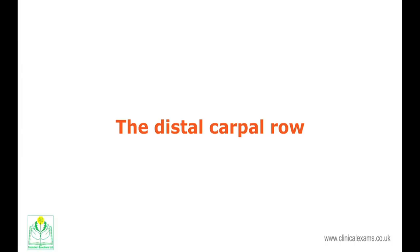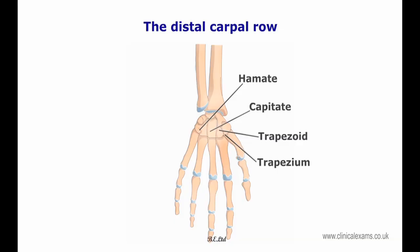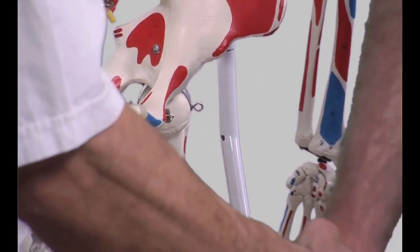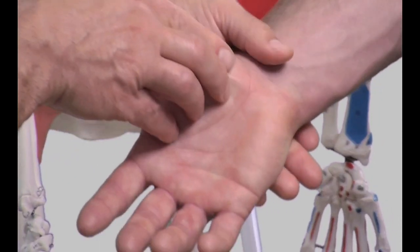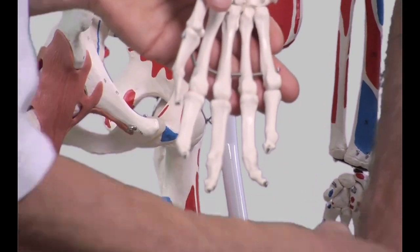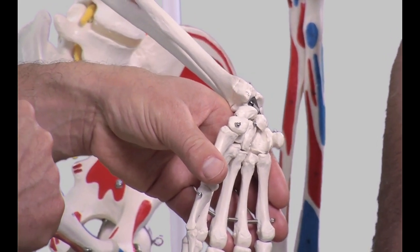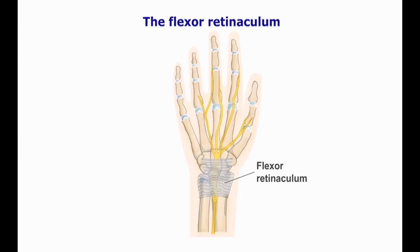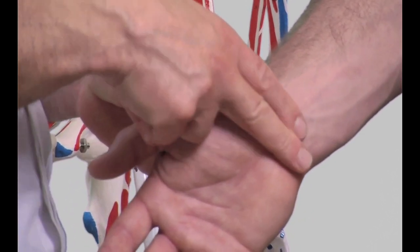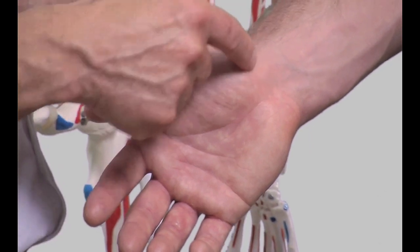The distal carpal row is made up of the trapezium, trapezoid, capitate and hamate bones. These bones are difficult to distinguish by palpation except for the hook of the hamate. The hamate is located on the medial aspect of the wrist on the distal carpal row; the hook-like process is located on the volar surface of the hand, projected forward and slightly laterally. The flexor retinaculum is a tough fibrous rectangular band attached medially on the hook of the hamate and pisiform, and laterally to the scaphoid and trapezium.